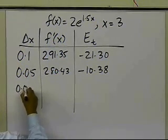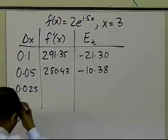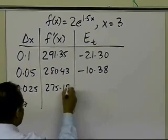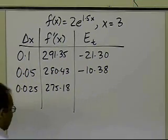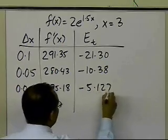I choose 0.025, which is again half of what I have chosen previously, I get 275.18, and in this case the true error is turning out to be minus 5.127.